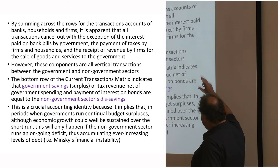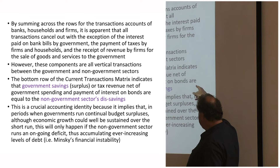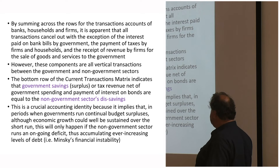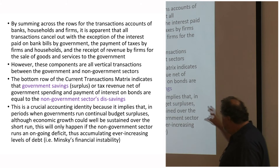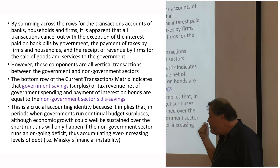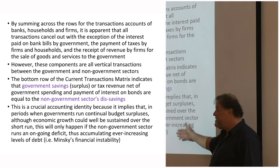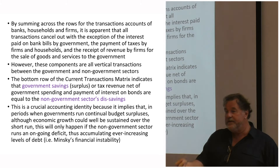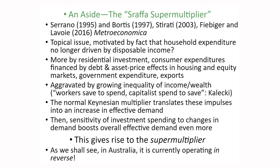The bottom row indicates government savings — tax revenue net of government spending and interest on bonds — equal to the non-government sector's dis-saving. That's a crucial accounting identity. It implies that in periods when the government runs continual budget surpluses, economic growth can only be sustained if the non-government sector is running an ongoing deficit, accumulating ever-increasing levels of debt. That is Minsky's notion of financial instability: running surpluses drives the non-government sector into deficit, accumulating huge problems.